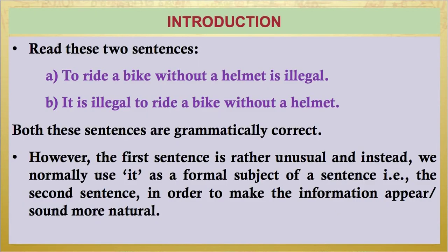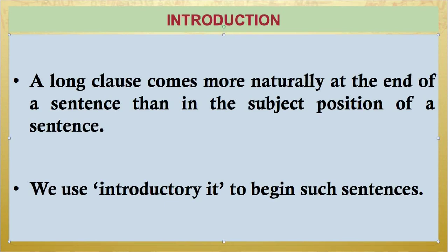To provide you with a brief introduction, consider these two sentences. For example: 'To ride a bike without a helmet is illegal' and 'It is illegal to ride a bike without a helmet.' Now, both these sentences are grammatically correct. However, the first sentence is rather unusual, and instead we normally use IT as a formal subject of a sentence — that is, the second sentence — in order to make the information appear or sound more natural. A long clause comes more naturally at the end of a sentence than in the subject position. We use introductory IT to begin such sentences.